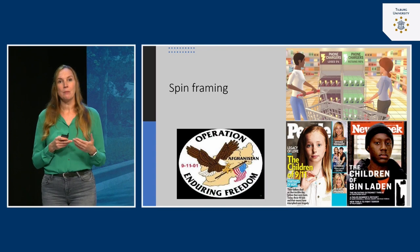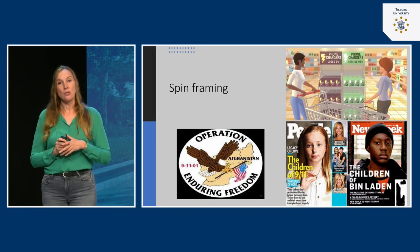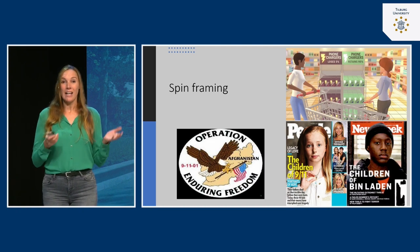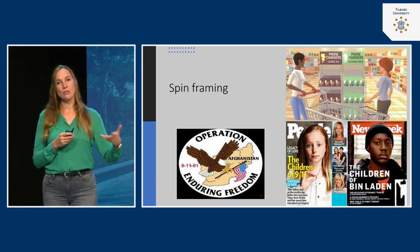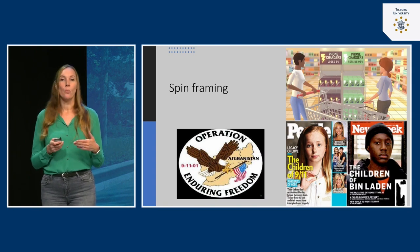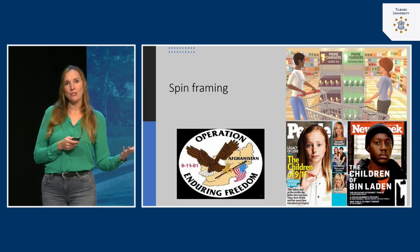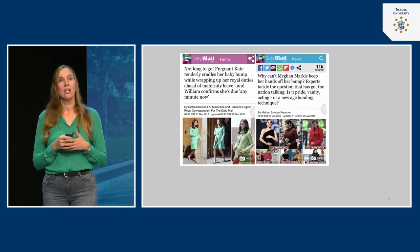Spin framing is also heavily used in the media, including when it comes to stereotypical information. Two magazine front pages — 'the children of 9/11' versus 'the children of bin Laden' — illustrate a stark difference. These images are one of the roots of why stereotyping and prejudice persists, because they reinforce certain stereotypes, which is very detrimental. Spin framing is also common in tabloids when they want us to like or dislike certain people — the British tabloids are especially known for this.